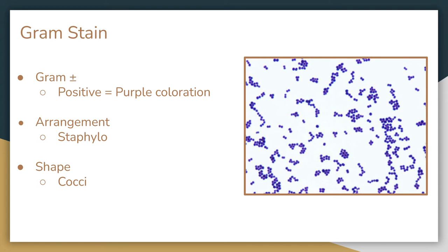First, I conducted a gram stain. This allowed me to see the shape, arrangement, and gram charge of my bacteria. With this, I was able to narrow down my search to a gram-positive coccus that occupies a staphylo arrangement.